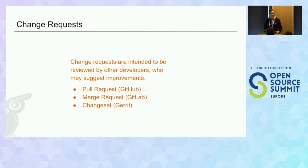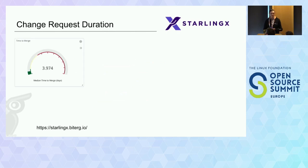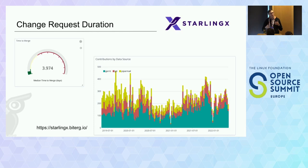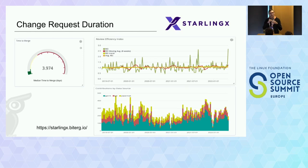There was another talk this morning about cycle time — the time it takes for first review, first attention, and so on. Looking at the StarlingX project, it takes on average about four days for a change request to be reviewed and then merged. This number by itself is interesting, but we need to look at context. Over three years, during the pandemic there was a slowdown in overall activity — we see a dip in the graph. But looking at the time to review change requests, it actually stayed steady and consistent throughout the entire three-year period.